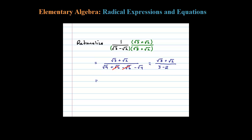Just simplifying further, square root of 3 plus the square root of 2 over 1. Since 3 minus 2 is 1, that gives us square root of 3 plus square root of 2. This is equivalent to the original fraction with no radicals in the denominator.